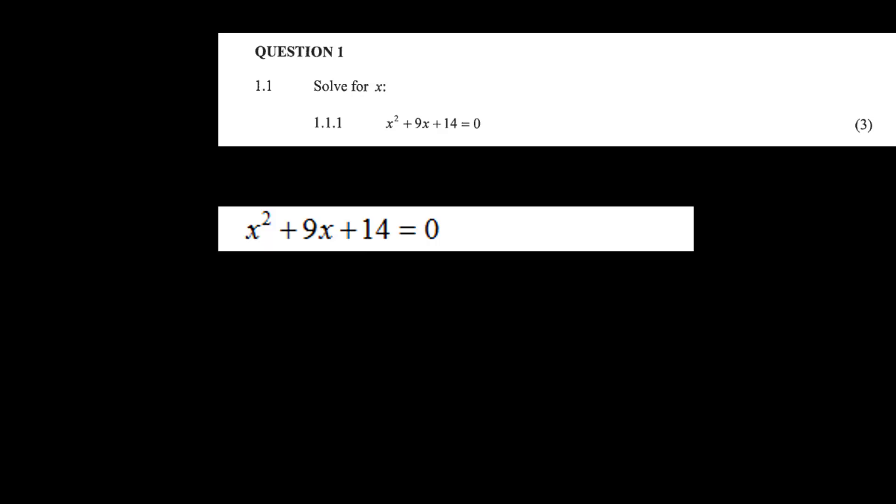Question 1.1.1: Solve for x squared plus 9x plus 14 equals 0. Well, this is a gift for three marks — it's factorizing a quadratic.